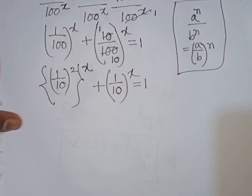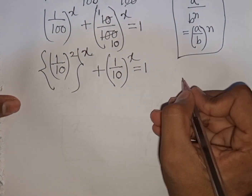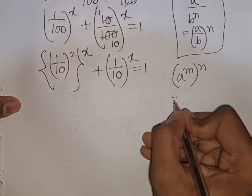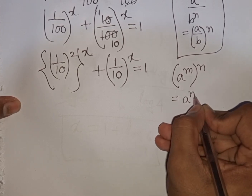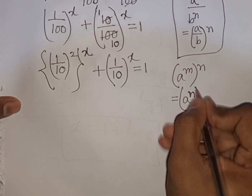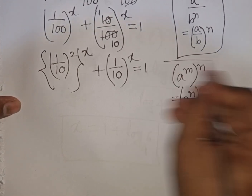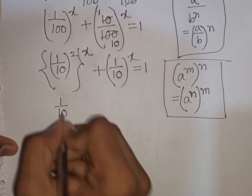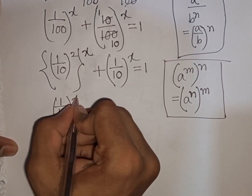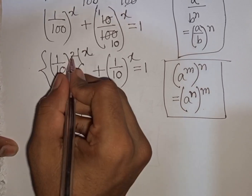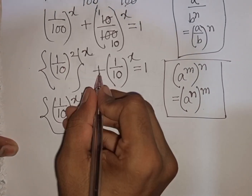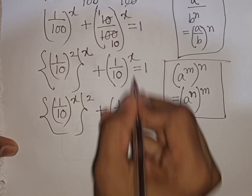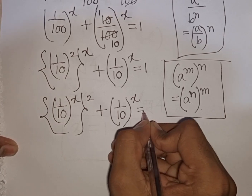Now we apply the exponential rule that a power m bracket power n is equal to a power n bracket power m. According to this rule, it will be 1 over 10 bracket power x, second bracket power 2, plus 1 over 10 bracket power x is equal to 1.